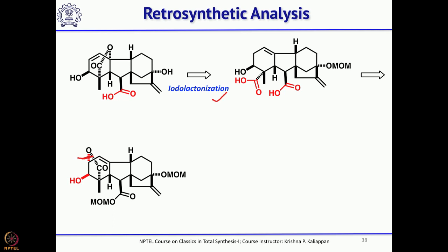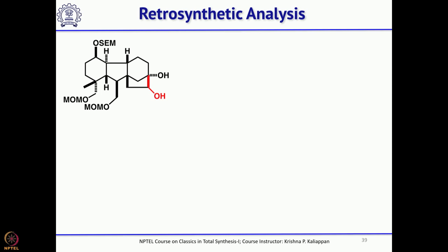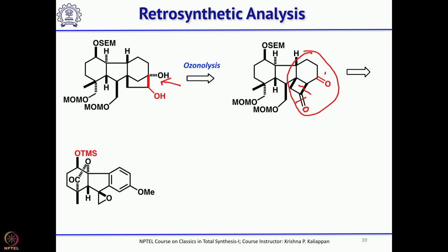He thought he could use that to get the corresponding double bond, which can be obtained from this alcohol. His idea was: if you have a bicyclic compound and do ozonolysis, you get a 1,3-diketone, then you can open the 4-membered ring. Opening followed by McMurry-type coupling gives the diol. That was the key reaction, and this he thought can be obtained by metal-ammonia and some functional group transformation.